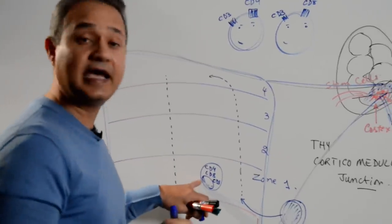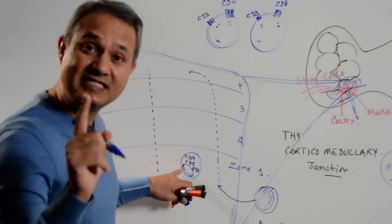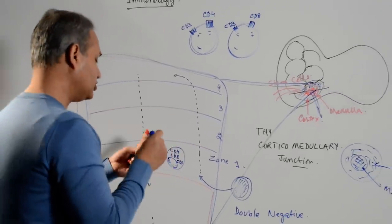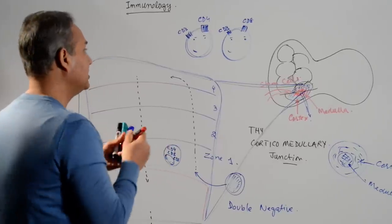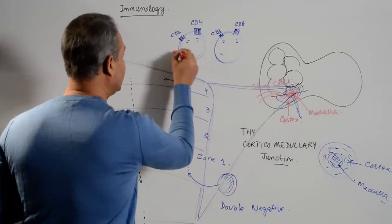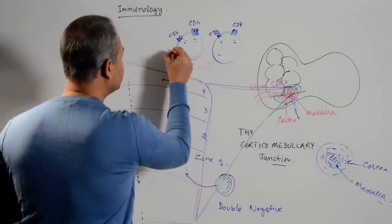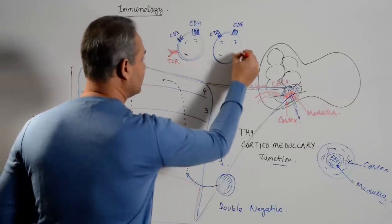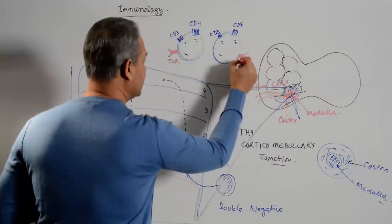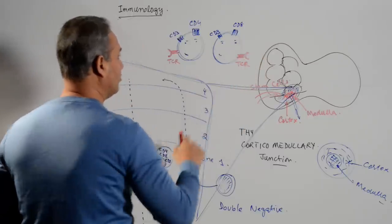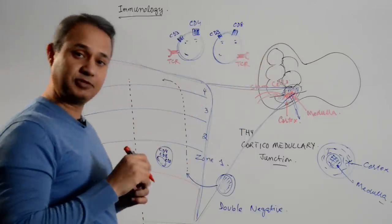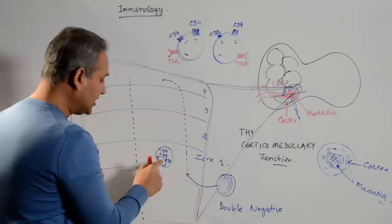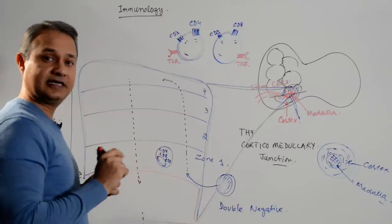This cell does not have, it does not have a T cell receptor yet. T cells also have a receptor on their surface. That receptor is called a T cell, TCR, T cell receptor. Both of them have it. CD8 and CD4, they both have a T cell receptor on them. This cell does not have a T cell receptor yet.